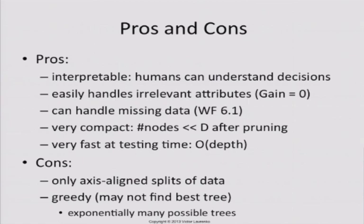So what are the positives and negatives? Why would you and would you not use decision trees? The biggest advantage is they are interpretable. Once you build them, you can actually say why something is classified positive or negative.